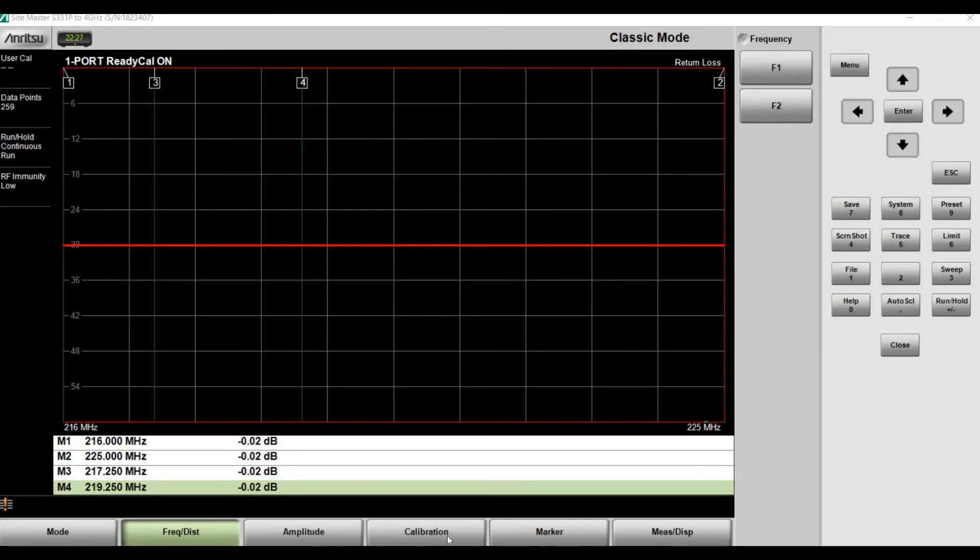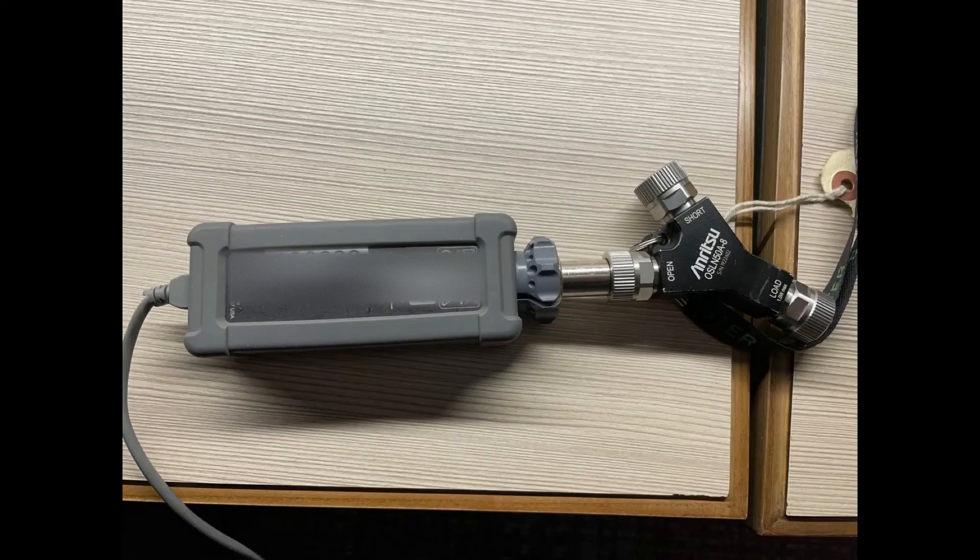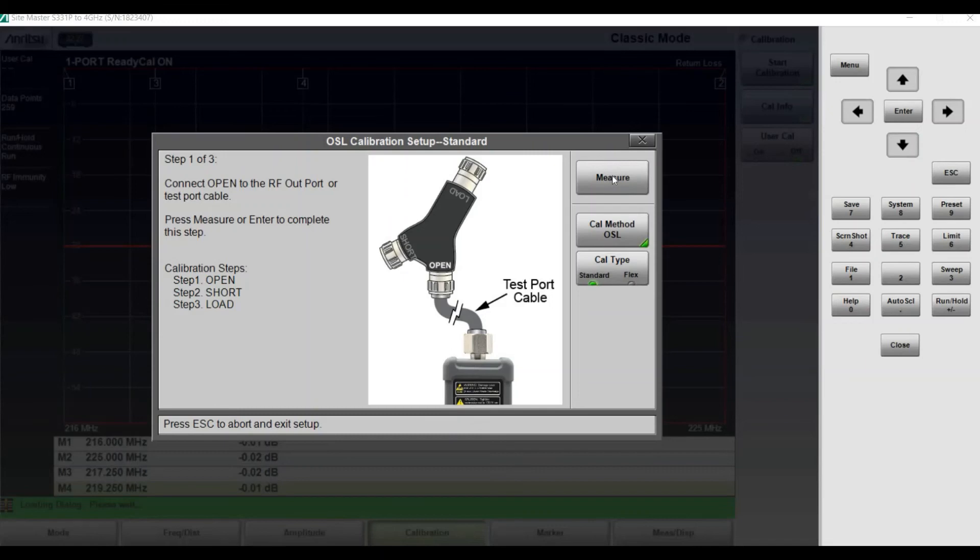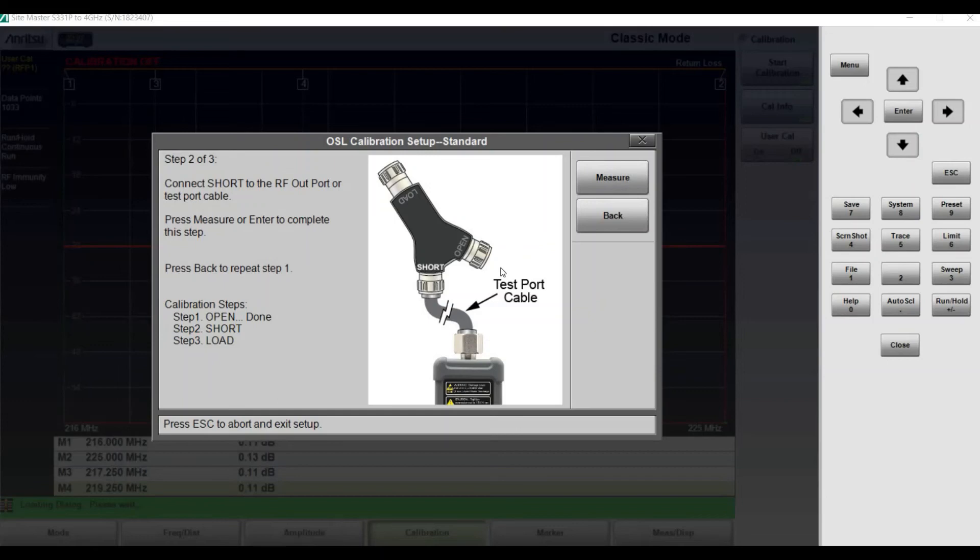To calibrate, click on calibration here and the system will guide you what you exactly need to do. So we click measure. Make sure you tighten it properly. Click measure. Displays the beep.